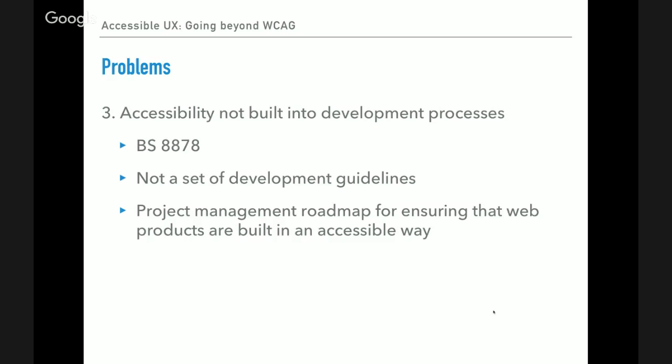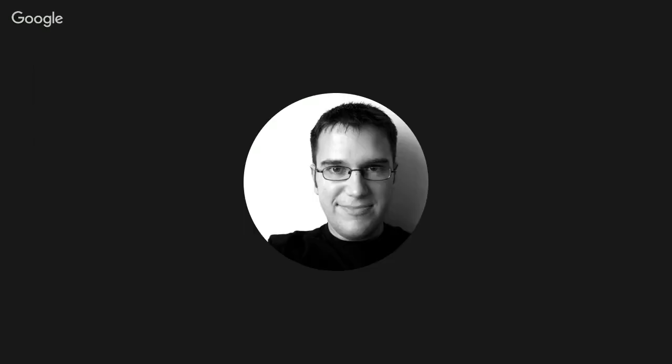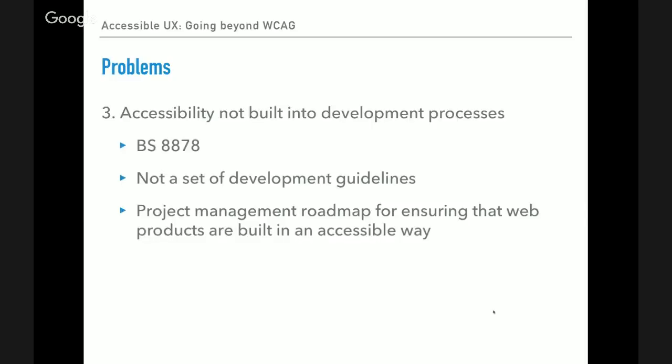A third problem is that accessibility isn't built into the development process. There's a standard in the UK called the S8878 — this is not a set of development guidelines, it's a roadmap for ensuring that web products, websites and apps are built in an accessible way. It gives you some pointers for implementing accessibility as part of your process.